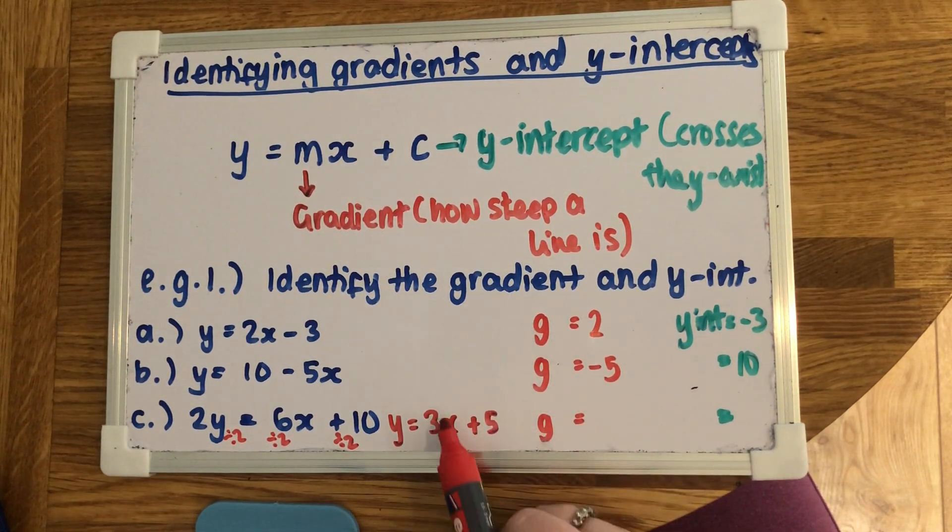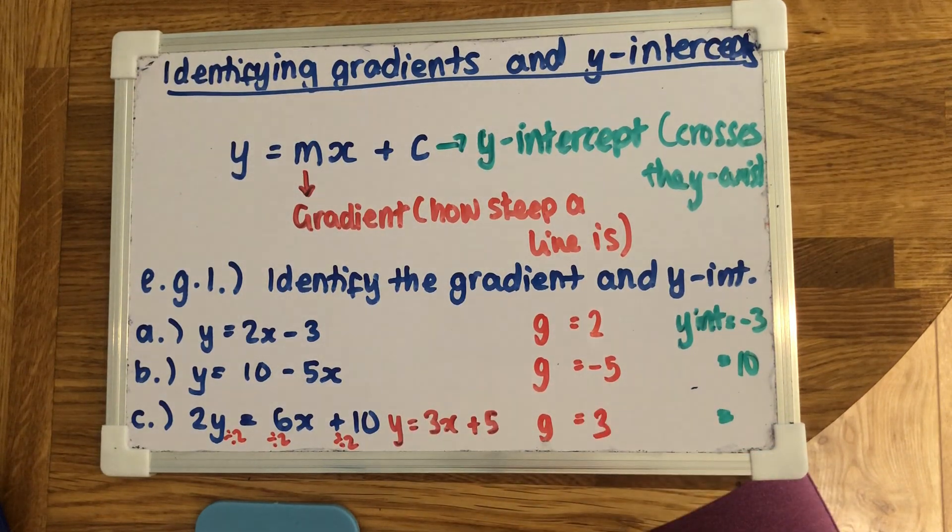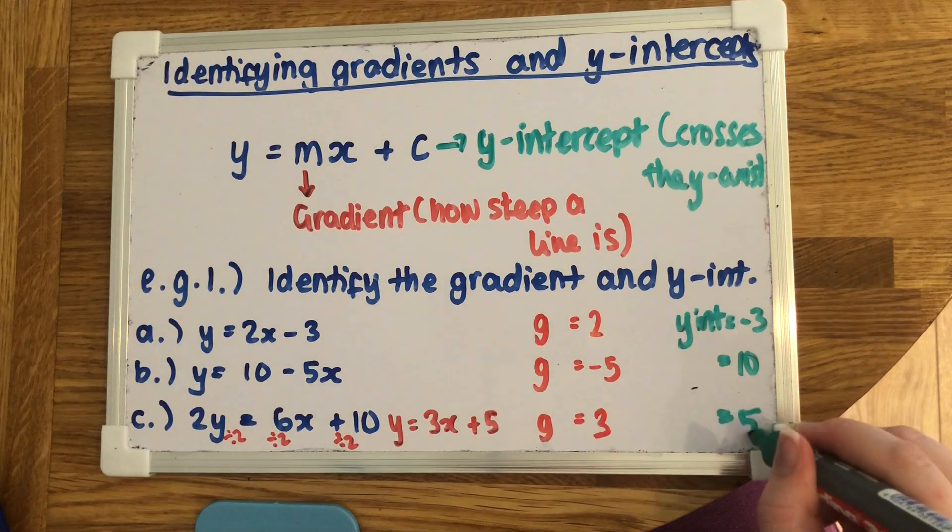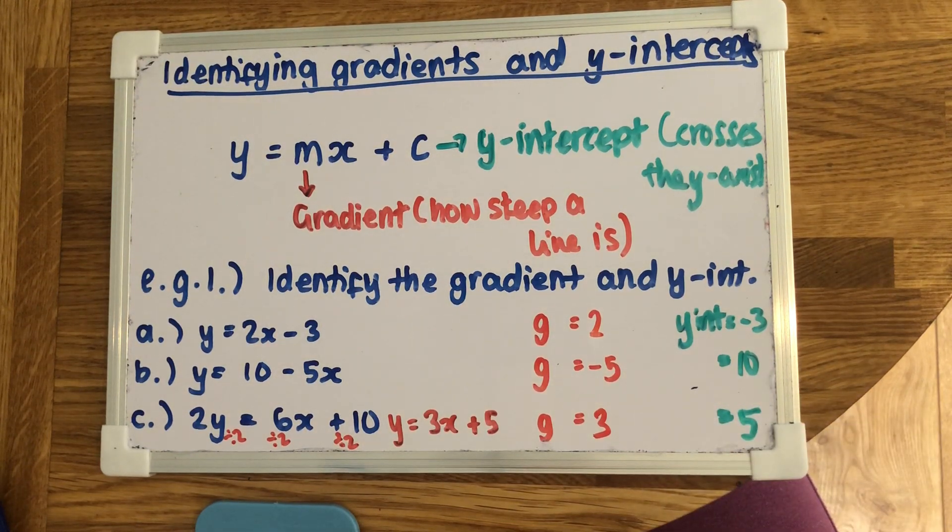So the gradient is the number in front of the x, which is 3. And the y-intercept is the number on the end, which is 5. So that's the hardest you'll get. You might need to do a little bit of rearranging. But overall, it's quite nice and simple.